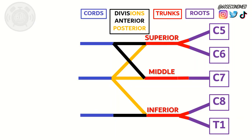The continuation of this leads to the cords of the brachial plexus, which are named the lateral, posterior, and medial cord.